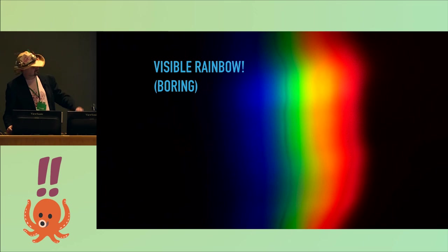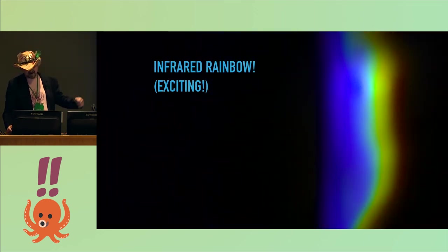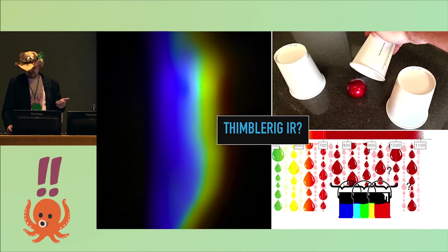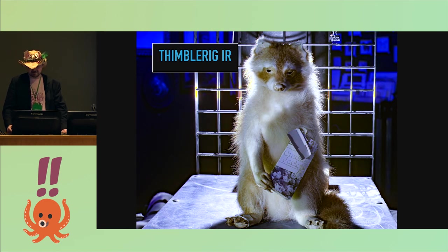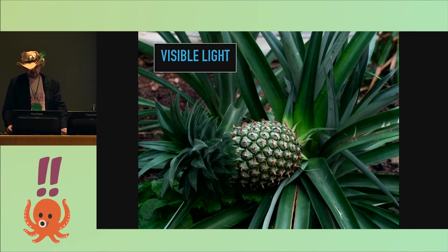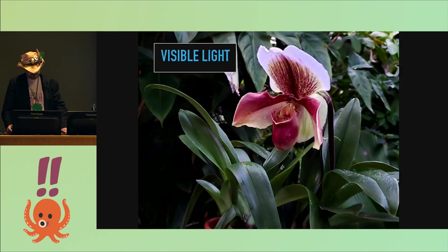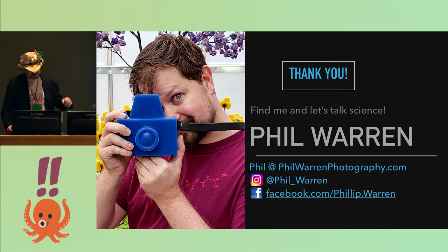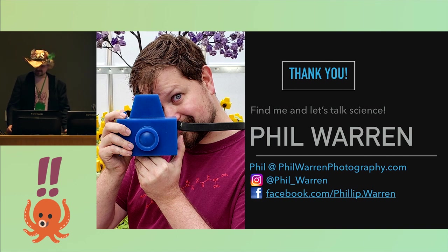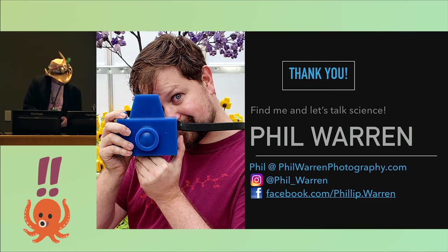Compared to the visible spectrum rainbow, this rainbow is further out with narrower bands. Because this is a novel, nameless method, I'm proposing it be named after the three-cup game — Thimble Rig. Using the same technique on a crackerjack-loving taxidermied raccoon, we see his domino mask disappear. A pineapple growing in an arboretum becomes a ghostly and beautiful thing. And a rainforest orchid loses all of its attractors for pollinating insects. If you want to hear more about this, I'd love to answer questions. I'm Phil Warren — visit my website at philwarrenphotography.com or find me on social media. Thanks for listening.